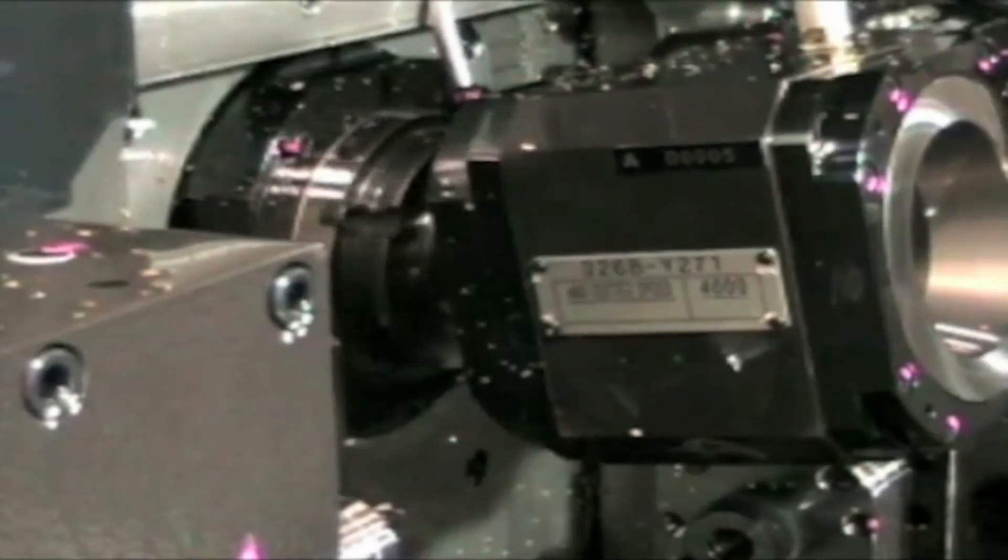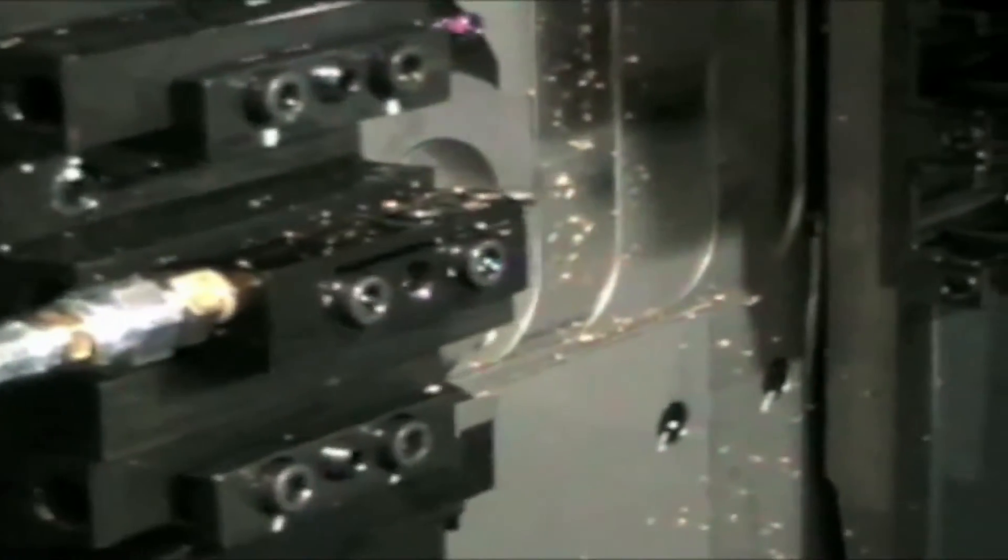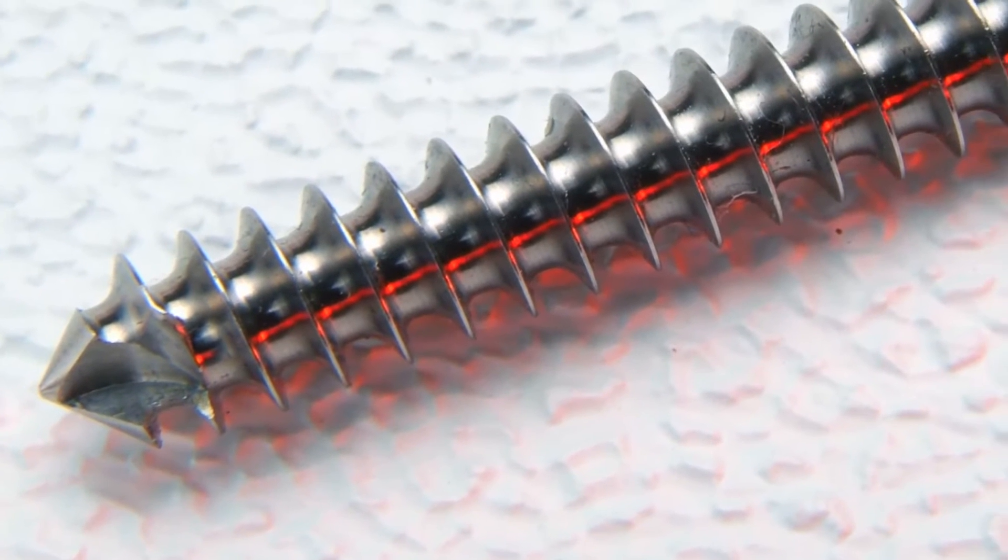The demand for more efficient processing has led manufacturers of whirling cutters to develop inserts and grades that can run faster and holders with more teeth. Running whirling cutters at higher speeds with more teeth significantly improves the rate of metal removal, which in turn decreases the cycle time it takes to produce a bone screw.